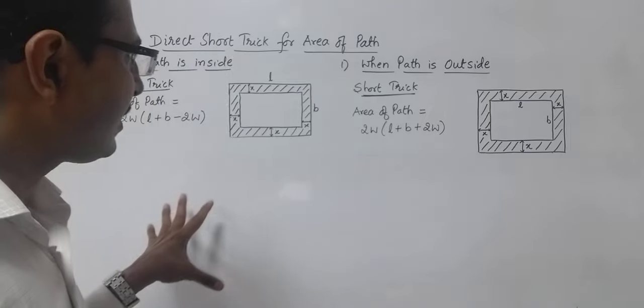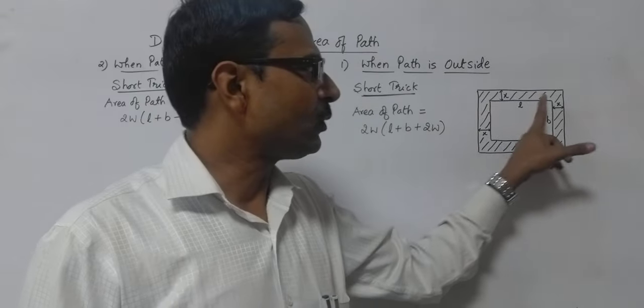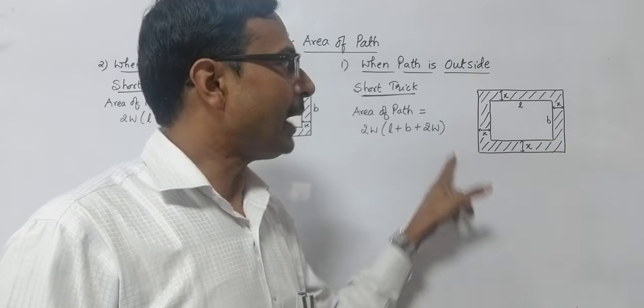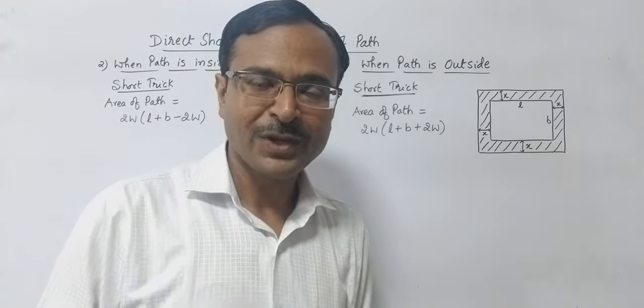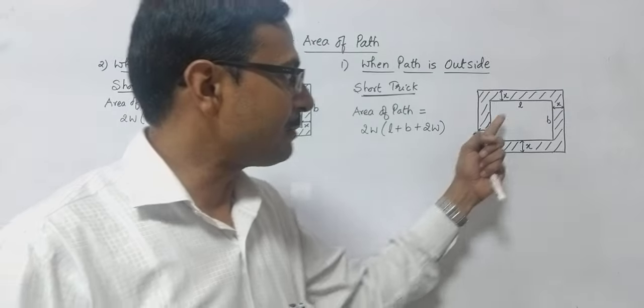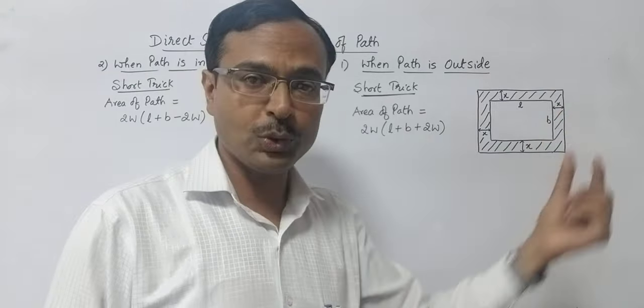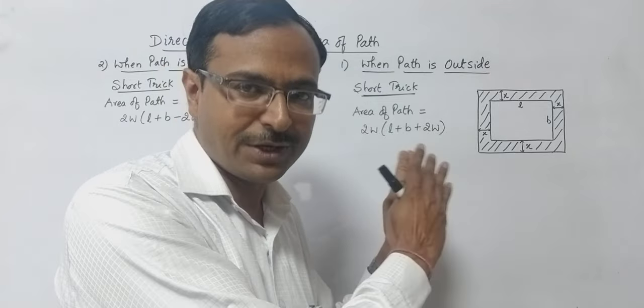The question which I am taking is you have a rectangular plot and around that on the outside we have the path of uniform width. So if the inner dimensions, that is the dimensions of the plot, are given to you and the width of the path is given to you, you need to find the area of this path which is shaded here.